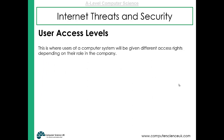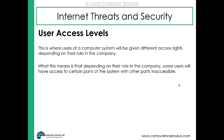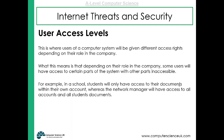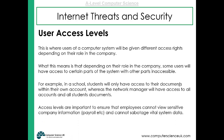User access levels are another security method where users of a computer system are given different access rights depending on their role on the network. Some users will have access to really sensitive information — perhaps management — while other staff might have limited access. In a school, for example, students will have access to their own documents within their own account, whereas a network manager will have access to all accounts. Access levels are really important to protect sensitive information and to ensure certain data cannot be viewed or sabotaged by certain people.